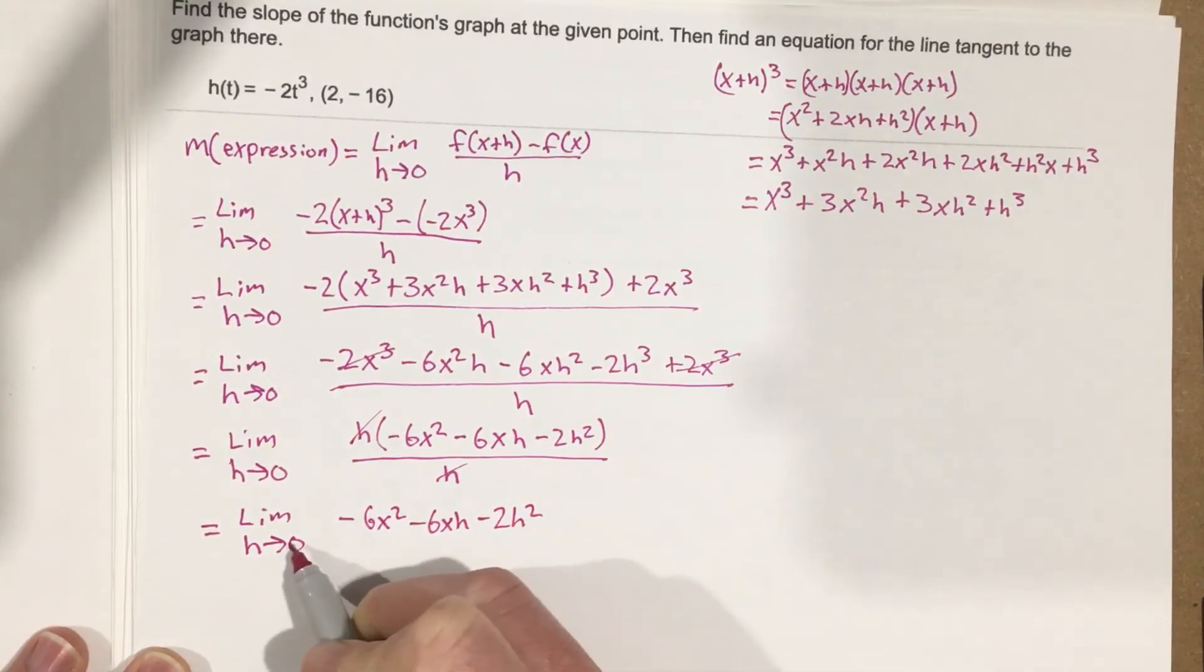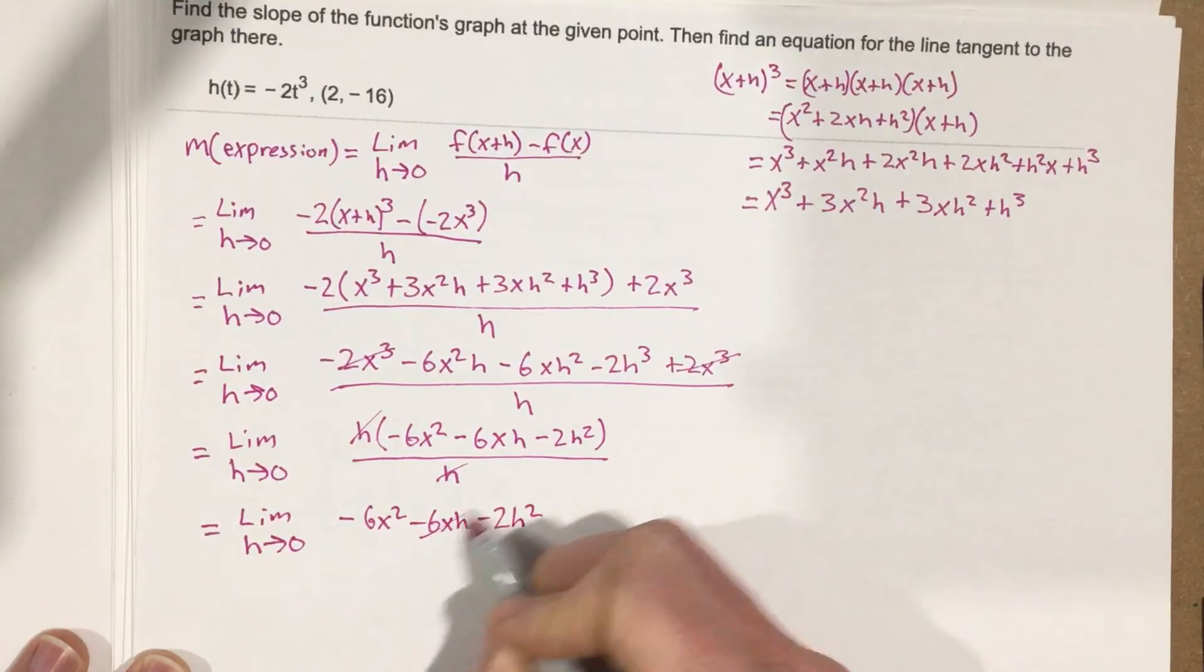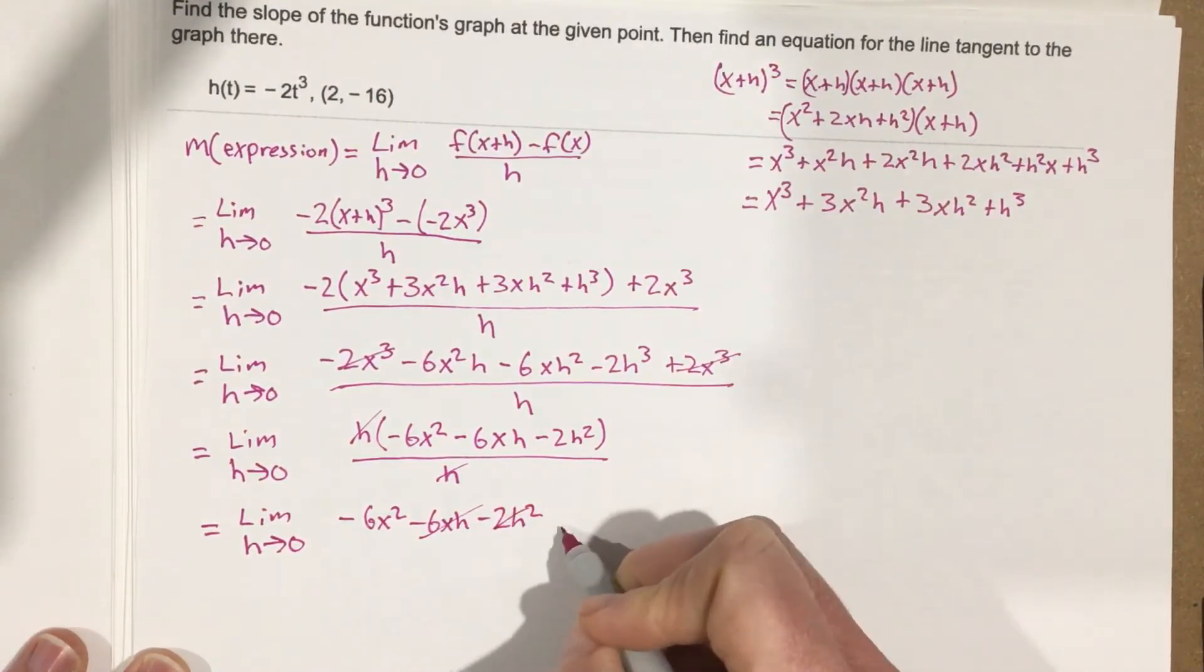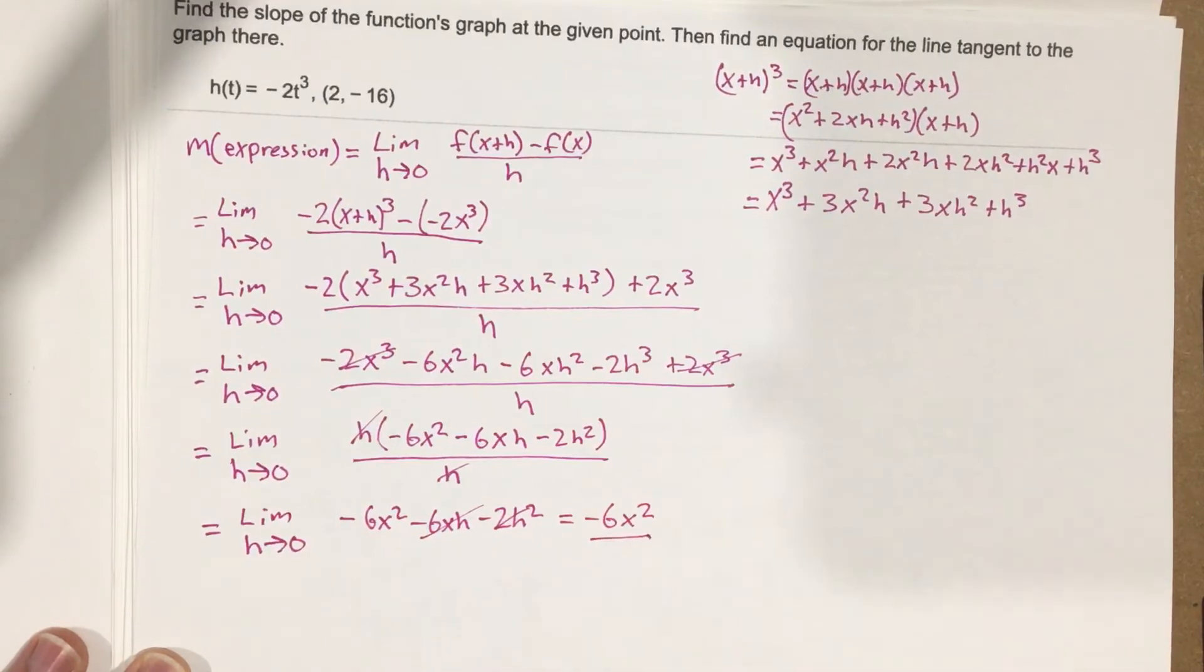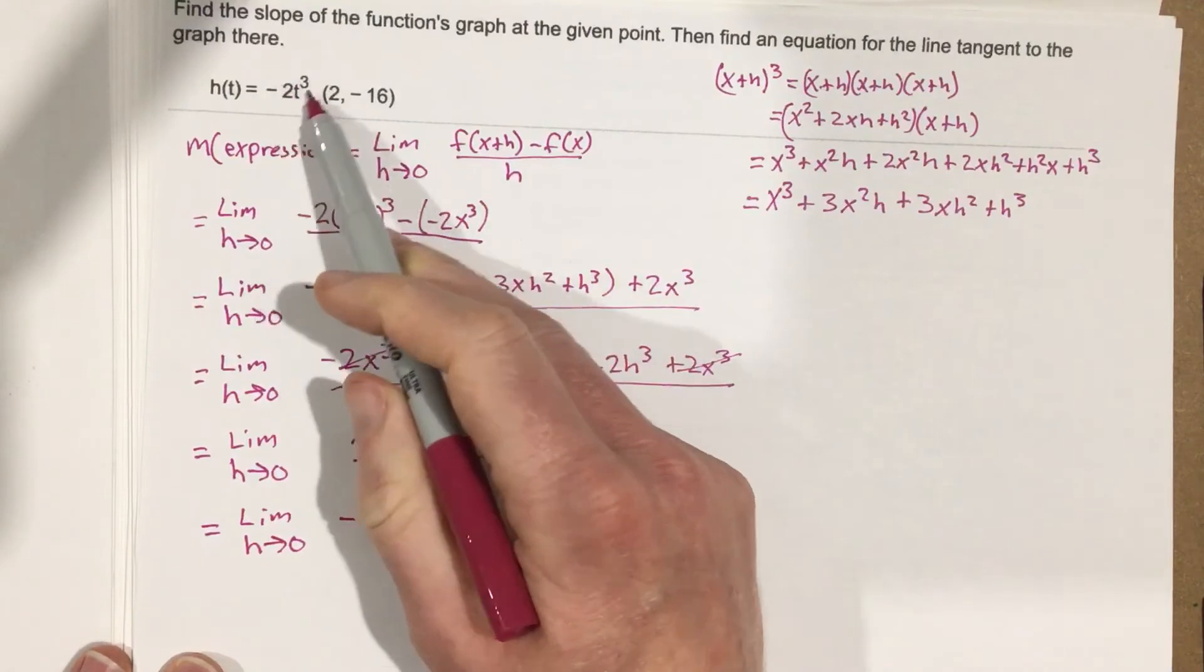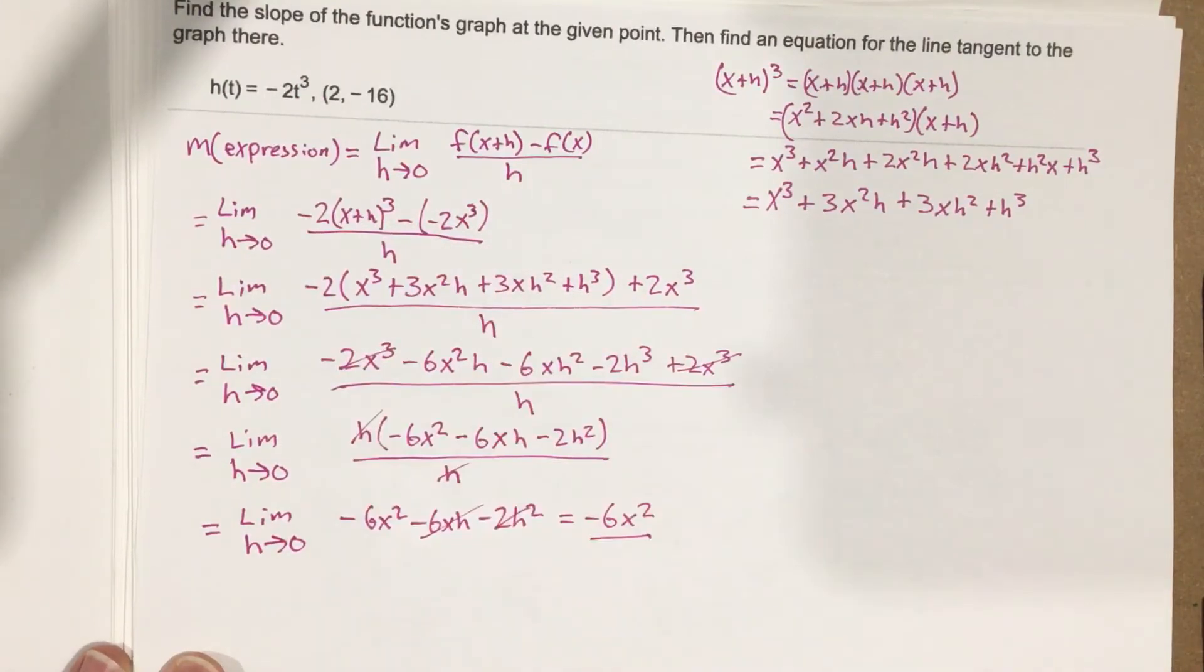When we plug in h of 0, this is going to cancel that term and that term, so we're left with negative 6x squared. This is the expression for our slope for any point on this line.